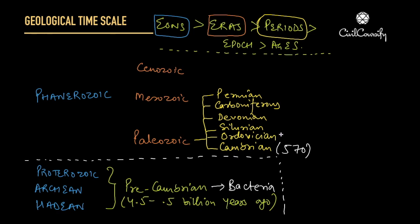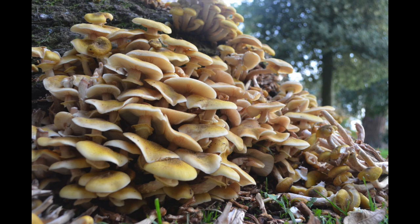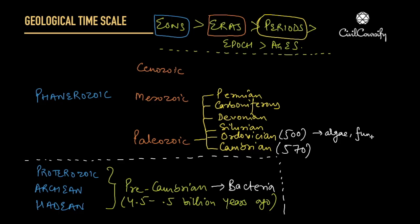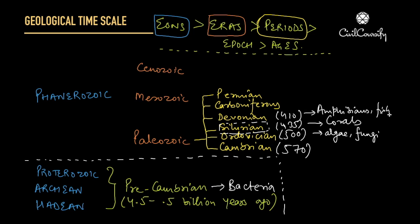Then the Ordovician period started roughly about 500 million years ago. It was famous for abundant marine algae and colonization of land by diverse fungi, plants and animals. Then the Silurian period started 435 million years ago. The Devonian started 410 million years ago and is known for the emergence of amphibians, diversification of bony fishes, and the first tetrapods and insects appearing in this period.